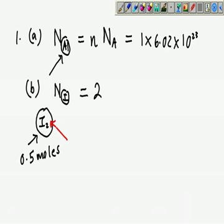0.5 mole of iodine molecules, since that's the case we need to modify. Because we are asking for how many atoms, we are asking for how many atoms all together.